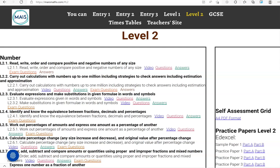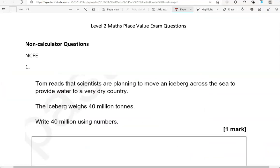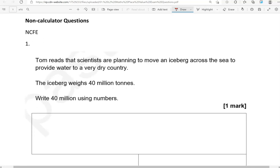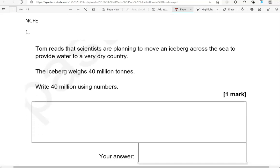In this video I'll go through exam questions which cover the level 2 criteria: read, write, order and compare positive and negative numbers of any size. You can locate the questions under exam questions on the MathsMass.com website under level 2. We'll go through exam questions from different exam boards within this topic, starting with non-calculator questions and then moving to calculator questions.